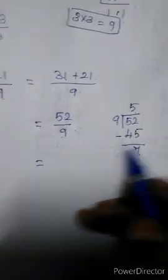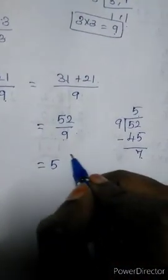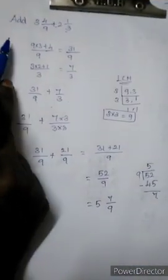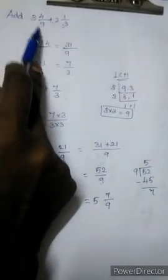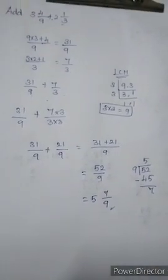So now we can write it in simplest form. This 5 should be right. 7 by 9. So we are having the question 3 4 by 9 and 2 1 by 3. Answer is 5 7 by 9.